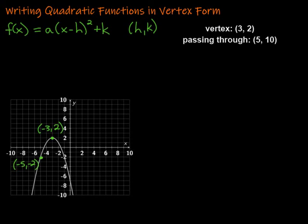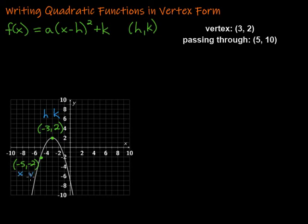One thing I would really strongly suggest as you approach these problems is to start by labeling what all of these numbers are going to go in for. That will make it really easy to drop them into the right spots — you don't have to think so hard as you're doing it. This is a nice and easy way to make it work. So h, k is our vertex. That is my h and there's my k. And then this other ordered pair — we're going to use that for the x and the y.